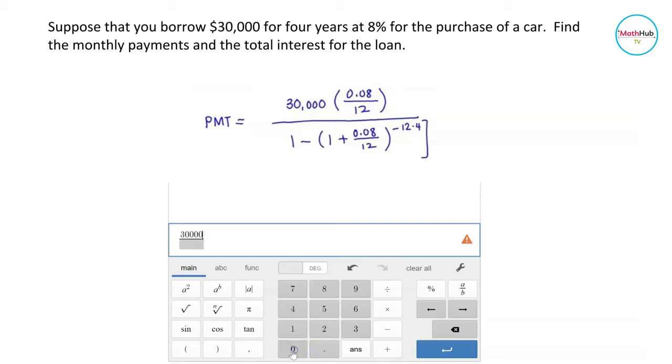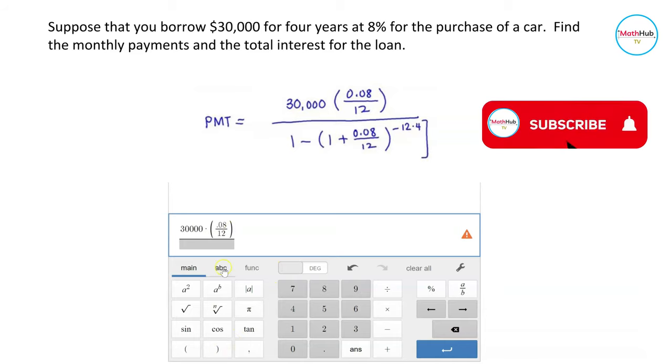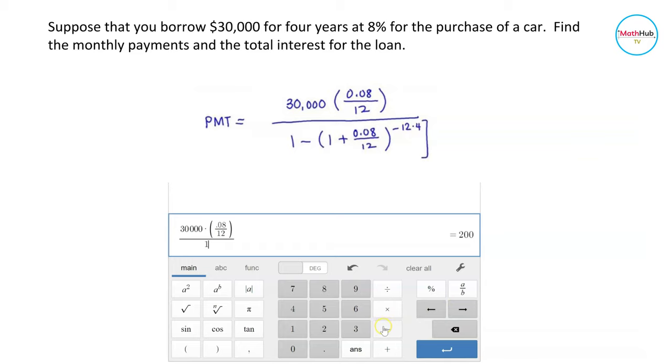So we have 30,000 as our principal times parenthesis. Rate is 0.08 divided by 12. This is the number of paying periods. Close it in a parenthesis and then the denominator is 1 minus open parenthesis 1 plus fraction 0.08 divided by 12.